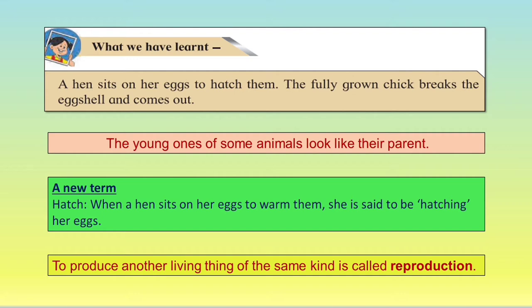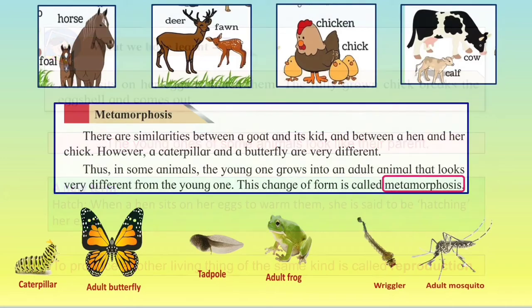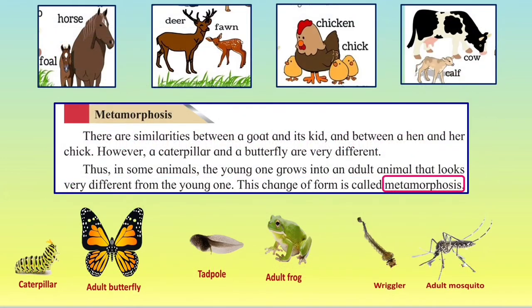Animals reproduce either by laying eggs or by giving birth to young ones. There are similarities between a goat and its kid, and between a hen and her chick. However, a caterpillar and a butterfly are very different.